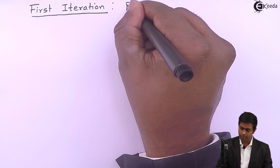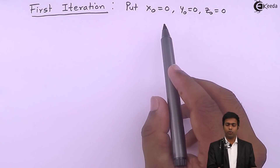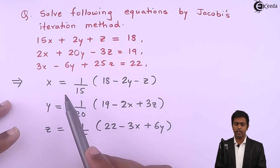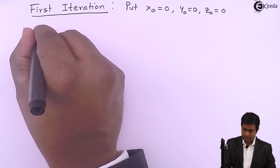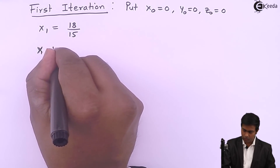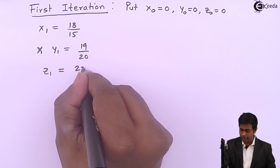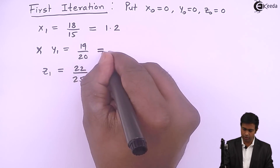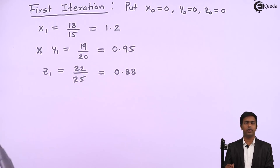For the first iteration, we put x0 = 0, y0 = 0, z0 = 0. The terms involving x, y, z all become zero, giving us: x1 = 18/15 = 1.2, y1 = 19/20 = 0.95, and z1 = 22/25 = 0.88. Now we use these roots for the second iteration.